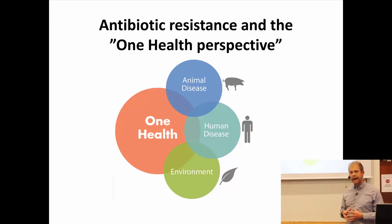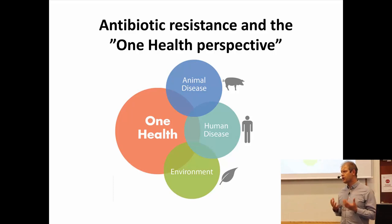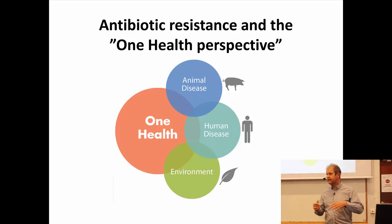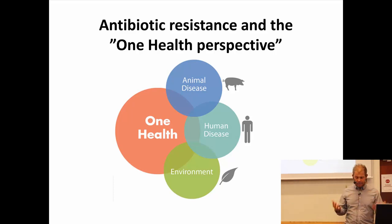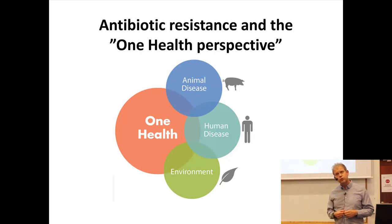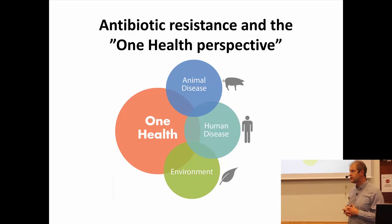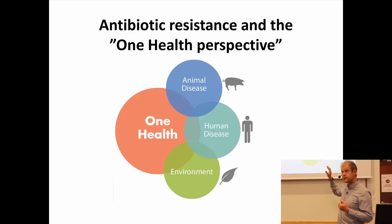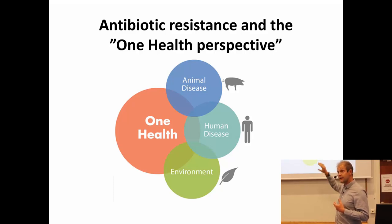So what is a One Health perspective? Originally, One Health was a term used to describe the integration of human health and animal health and the health of our environment. You can address many health issues from this perspective. When it comes to antibiotic resistance, the One Health perspective refers more specifically to the phenomenon that bacteria and bacterial genes can move between humans and animals and the environment in different ways.